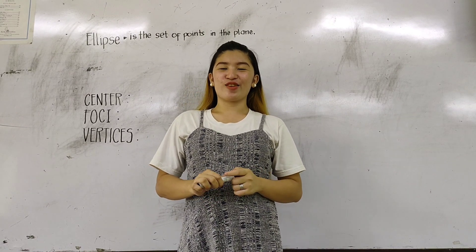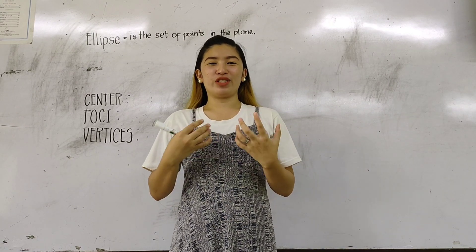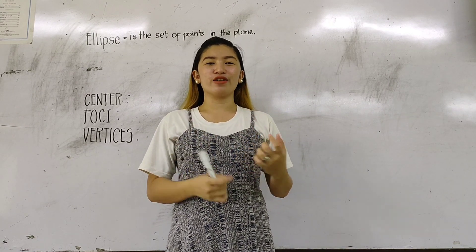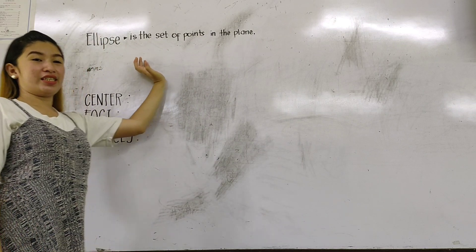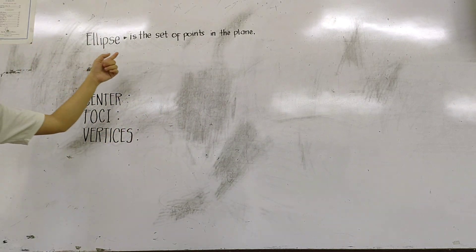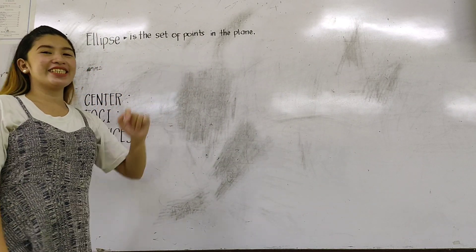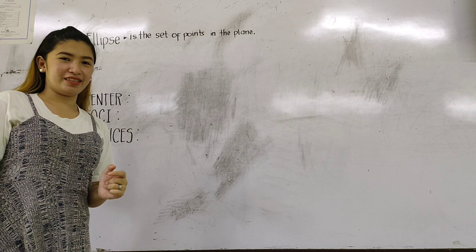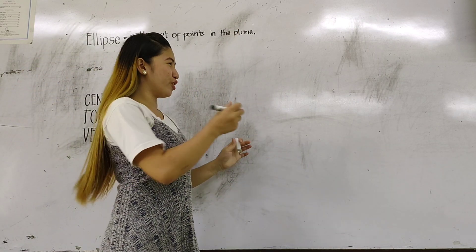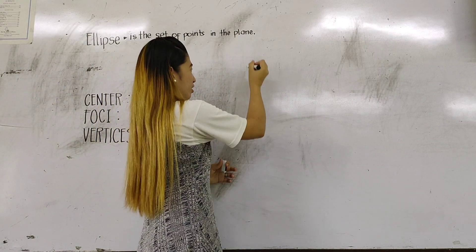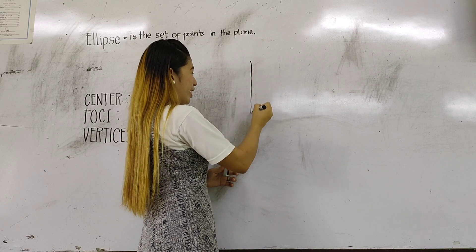We're coming to class. So for today, I will discuss about the ellipse. The ellipse is the set of points in the plane. For example, the figure of the ellipse — we have it here in the Cartesian plane.